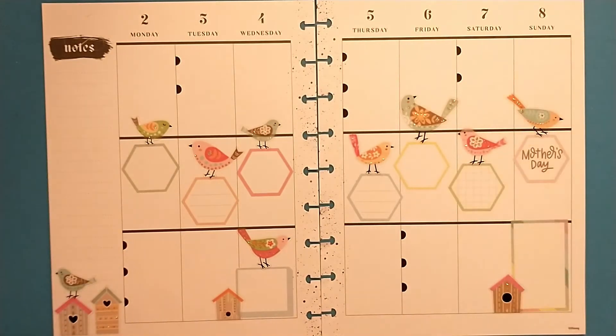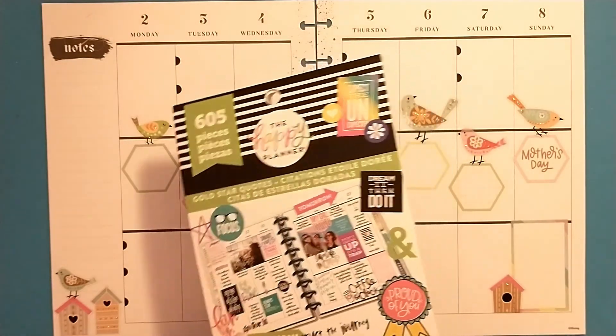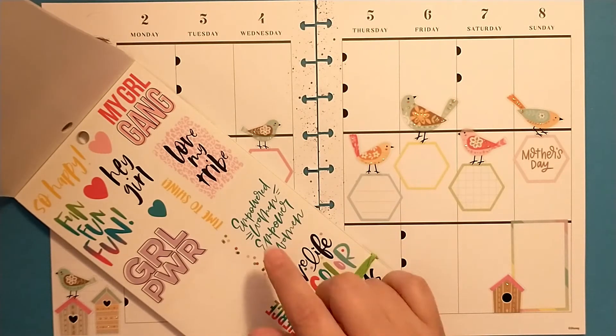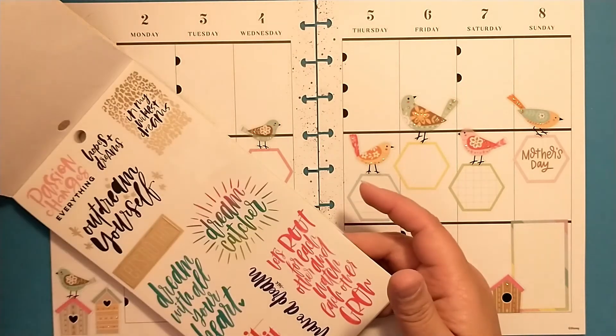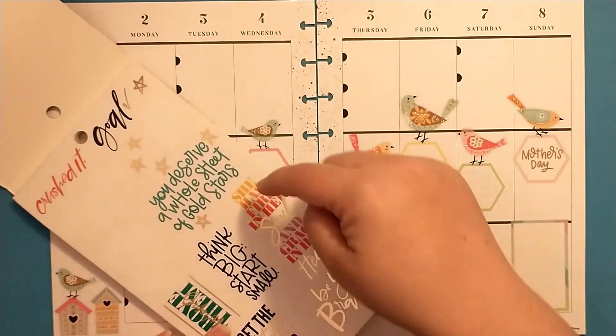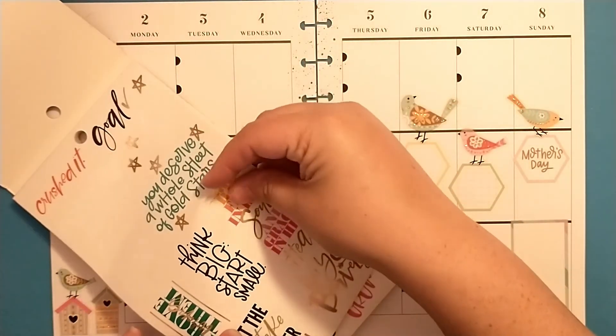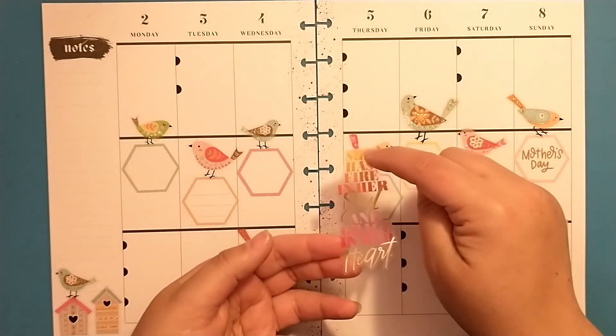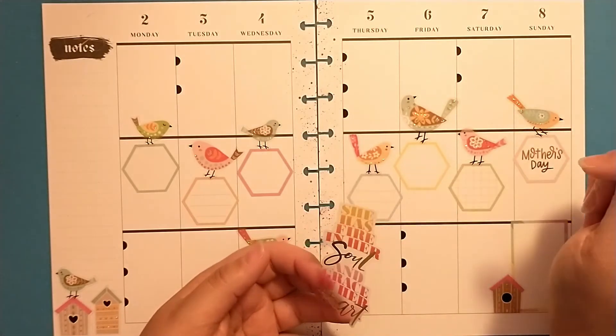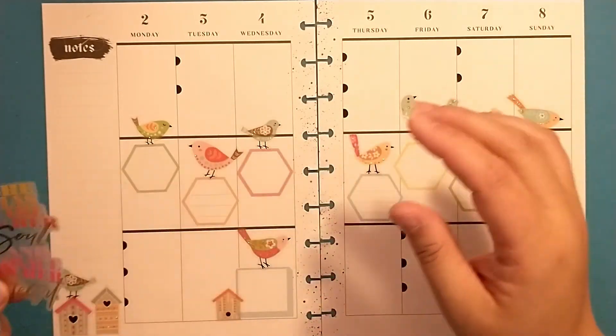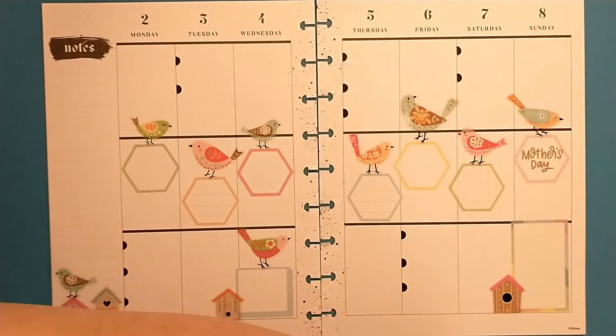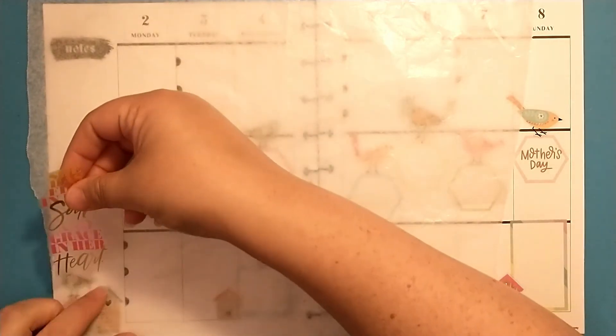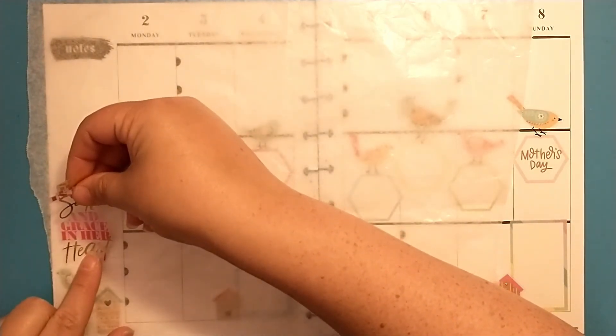I also grabbed the gold star quotes book. I know there's this Empowered Women Empower Women quote that would go good with this. Maybe this one, She Has Fire in Her Soul and Grace in Her Heart. I really like that. I think that's fitting for Mother's Day. The colors mostly go, we've got the yellows and oranges and the red is more of a reddish pink so I think that will go.